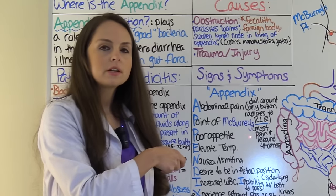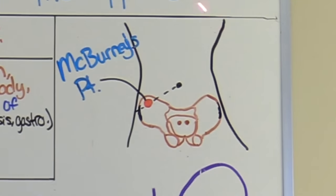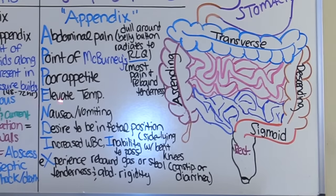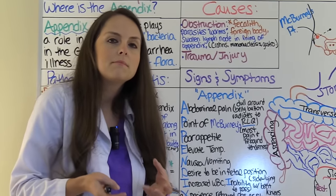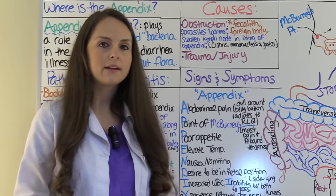P is for point of McBurney's — where the pain will be most intense. McBurney's point is found by locating the belly button and the anterior superior iliac spine; it's about one-third the distance between those two points. That's approximately where the appendix will be. The next P is for poor appetite. E is for elevated temperature. N is for nausea and vomiting. D is for desire to be in the fetal position — the patient will lie on their side with knees bent to relieve pain. If you see your patient doing that with abdominal pain and these other symptoms, that's a red flag for appendicitis.